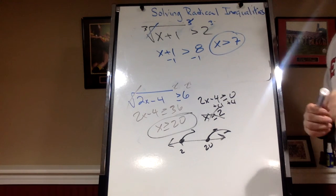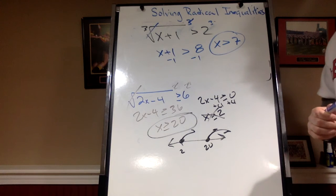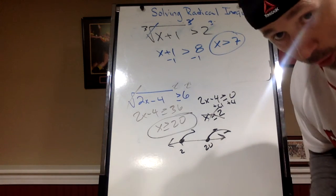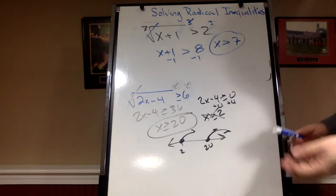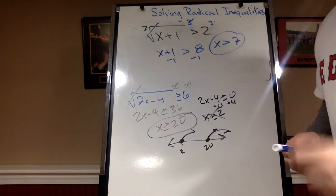No. There's no rule where I can't take the cube root of a negative. Because think about it. The cube root of negative 27 is negative 3. I can do it. It's only on even roots.